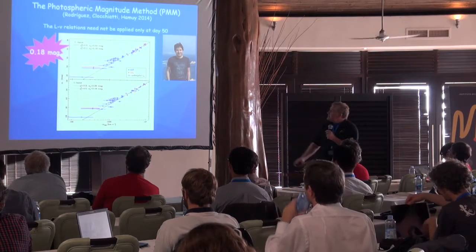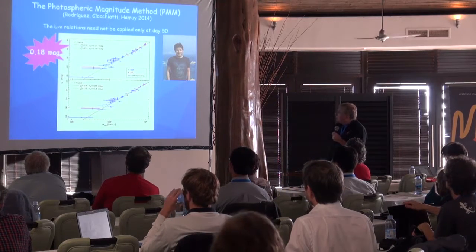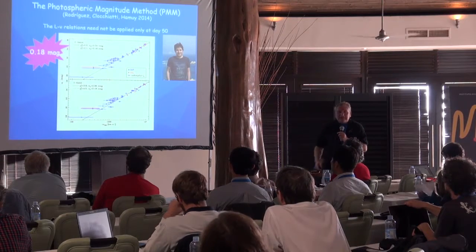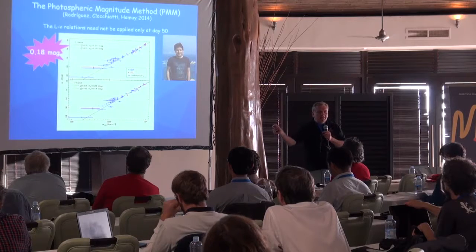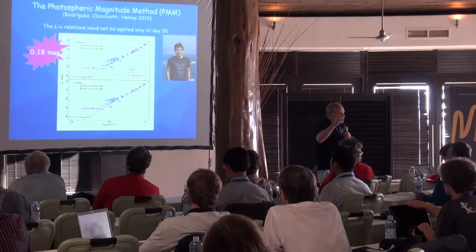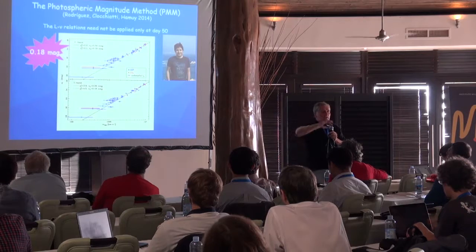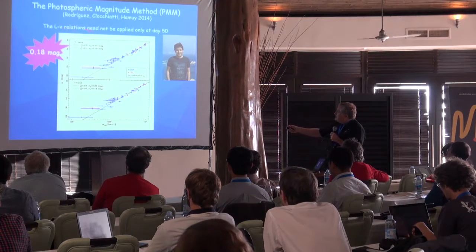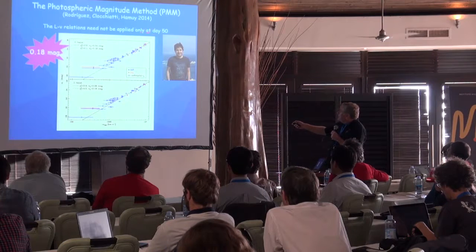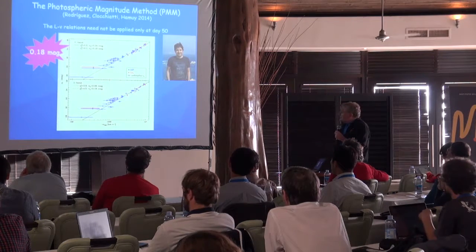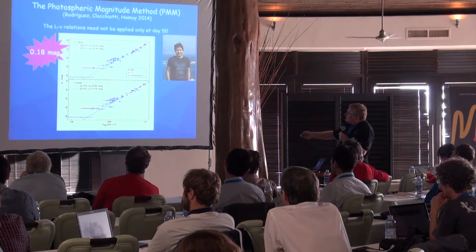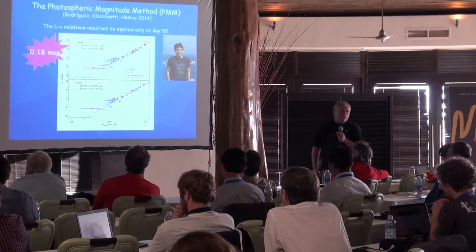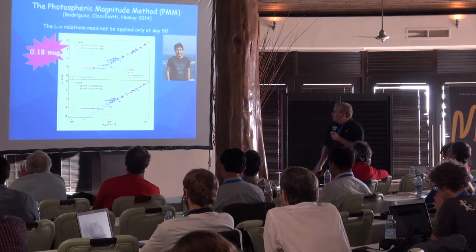Osmar Rodriguez, with Alejandro Clocchiatti and myself, demonstrated that you can apply this luminosity versus velocity technique at almost any time along the plateau — any epoch. These relations need not be applied only at day 50. You can use them at any time along the plateau, and with this implementation they get an even smaller dispersion in the Hubble diagram.